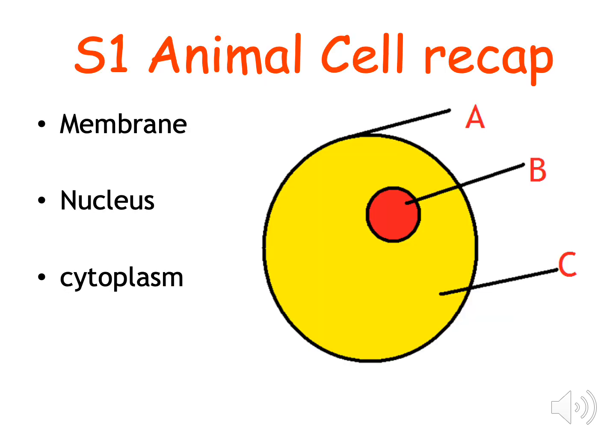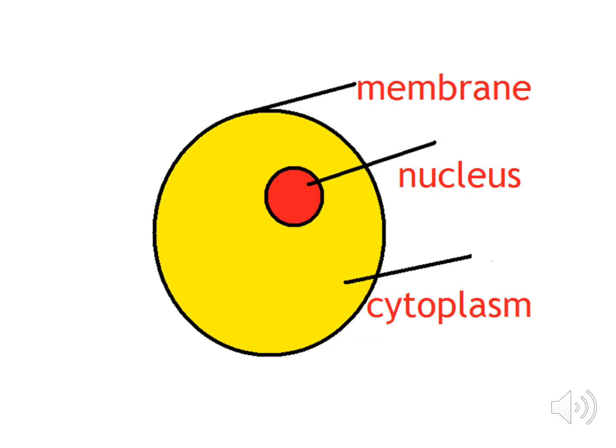In first year you learned about the structure of animal cells. I'm going to give you 10 seconds. Can you match the cell structure to the letter on the diagram? So well done if you've got this correct. A was the cell membrane, B was the nucleus and C was the cytoplasm.